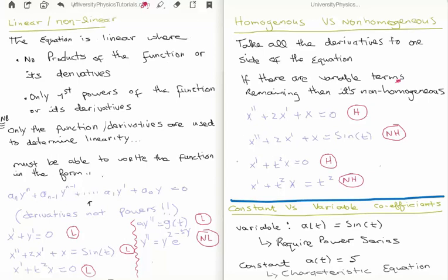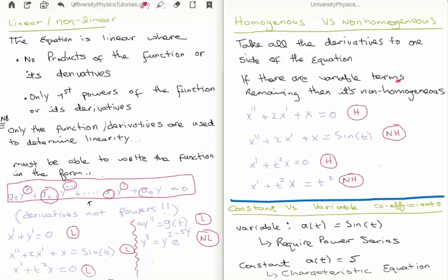The most general way to determine linearity is that you must be able to write your equation in the following form: a_n times the nth derivative, plus a_{n-1} times the (n-1)th derivative, working all the way down to the first coefficient times the first derivative, plus the zeroth coefficient times the function. If you can write your equation in this particular form, then your equation is said to be linear. There are equations out there that do not fit this form, and as a result, they are non-linear.